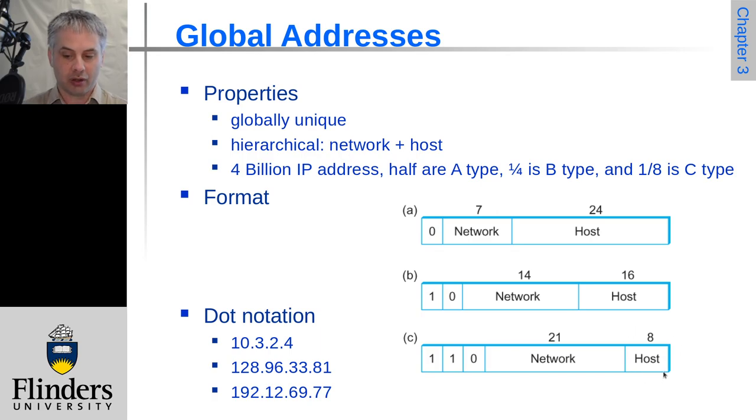And so on these class C network addresses, there's only eight bits for host. So that's 256, 2 to the power of 8 is 256. And so when this addressing scheme was in use, you could request class C addresses in particular, even as a small organization quite readily.